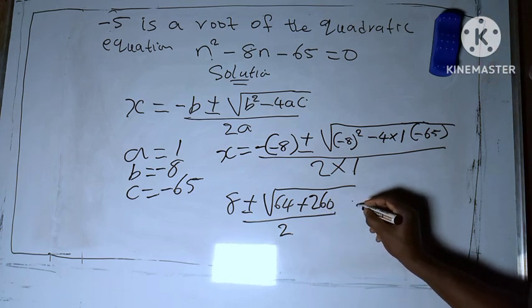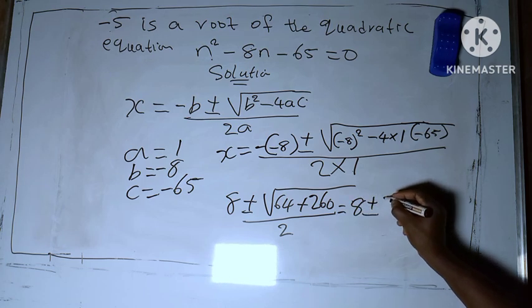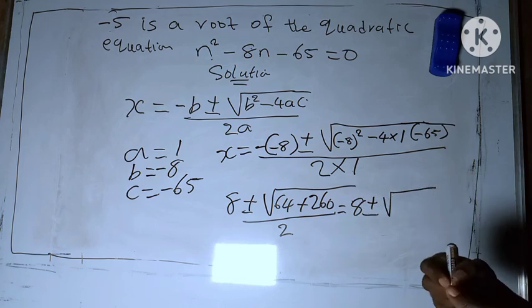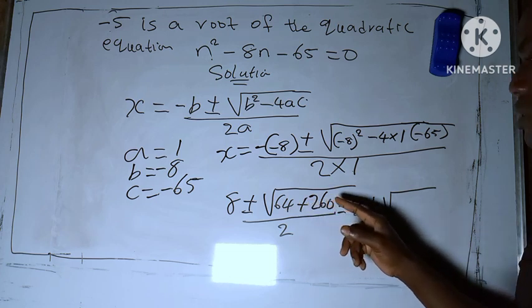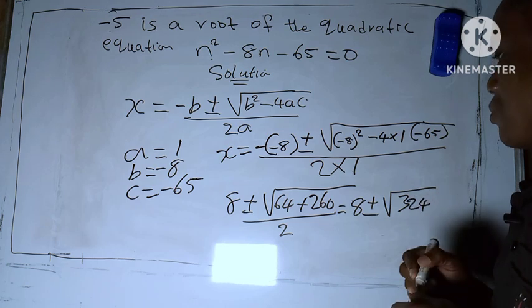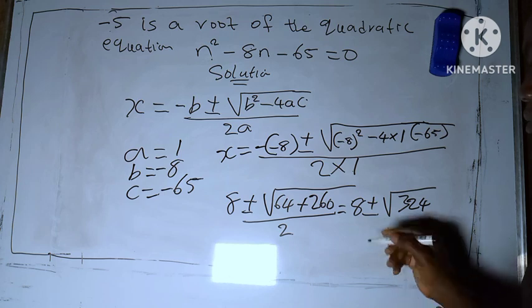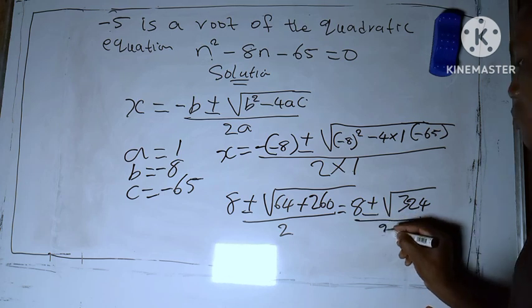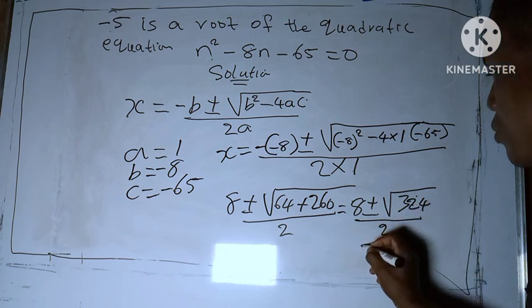So 8 ± √(64 + 260). 64 plus 260 gives you 324, over 2. So square root of 324 to give us...